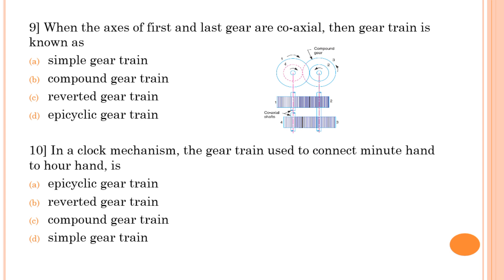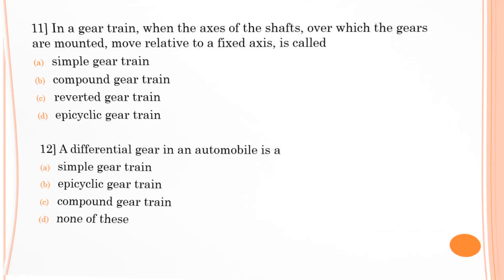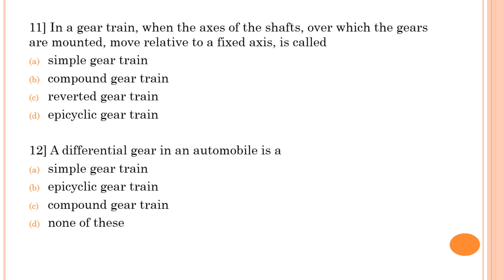Tenth question: in a clock mechanism, the gear train used to connect the minute hand and hour hand is? In a reverted gear train, input and output shafts are coaxial. In a clock, the minute hand and hour hand are both coaxial but rotate at different speeds — achievable only with a reverted gear train. Therefore option B, reverted gear train, is correct.